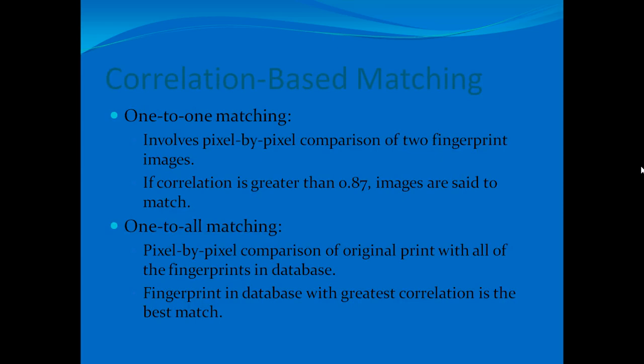The first fingerprint matching algorithm implemented in MATLAB was correlation-based matching. For one-to-one matching, a pixel-by-pixel comparison of the two fingerprint images was performed. If the correlation between the two images was greater than 0.87, the images were determined to be a match. For one-to-all matching, a similar pixel-by-pixel comparison of the original print with all fingerprints in the database was performed; the fingerprint with the greatest correlation was determined to be the best match.